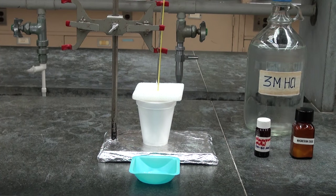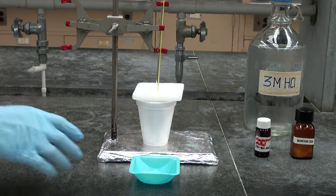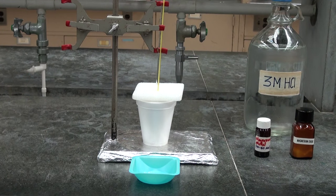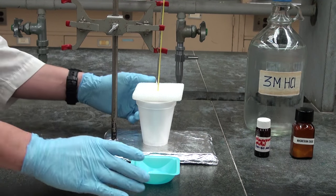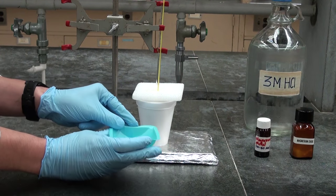With our coffee cup calorimeter set up, we should wait three minutes to allow the temperature to equilibrate, meaning that the temperature should not be moving. At that point, we can then add the magnesium oxide to the hydrochloric acid.